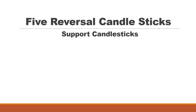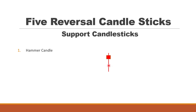Five reversal candlesticks in the support zone. The first one is the hammer candle. The hammer candle has a smaller body, a small upper wick, and a longer lower wick — this is called the hammer. The wick is also called the shadow. The hammer has a smaller body at the top with a long lower wick.